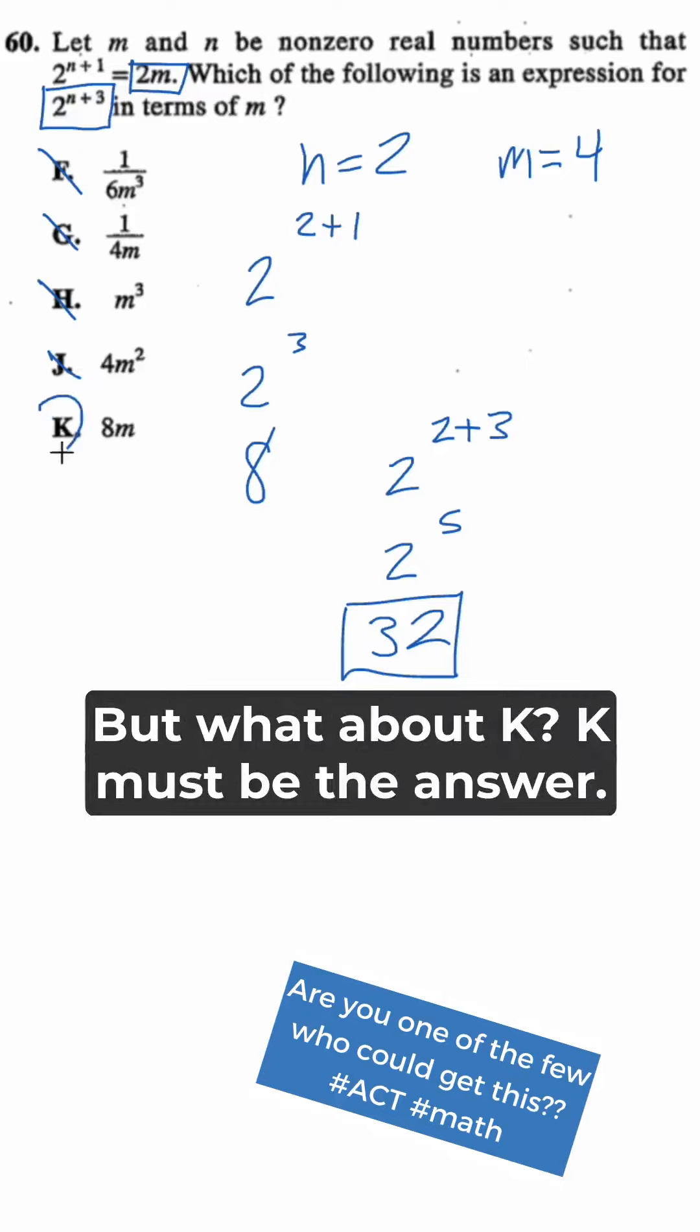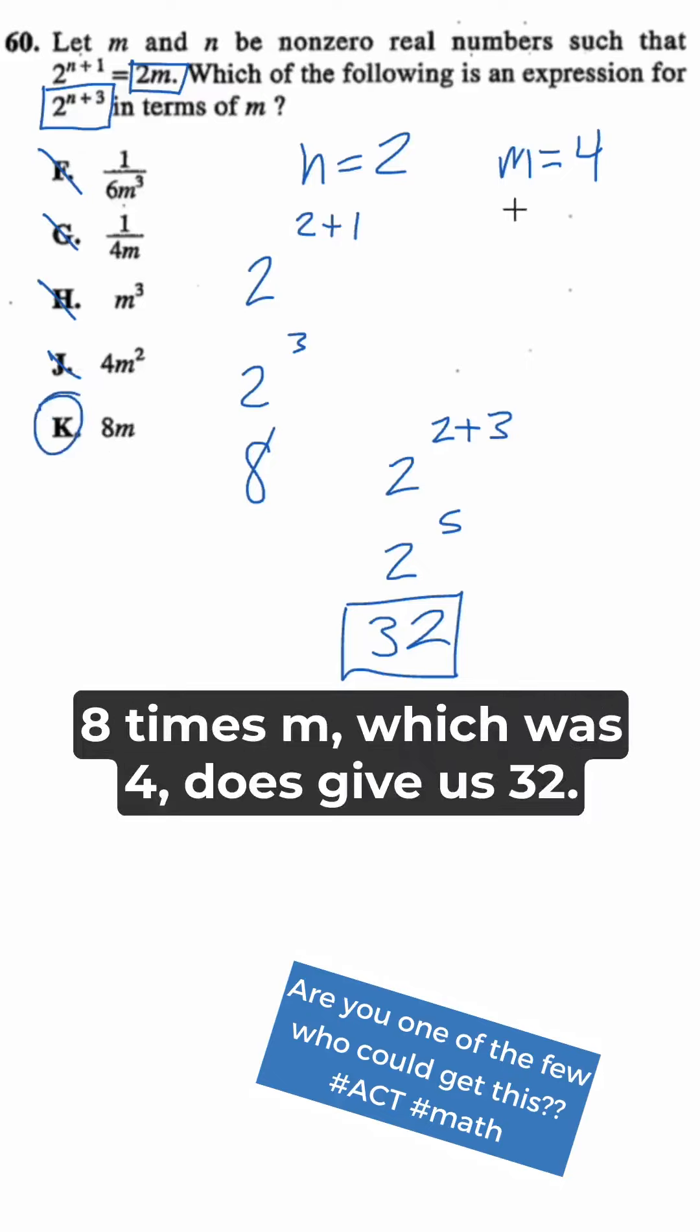But what about K? K must be the answer. 8 times m, which was 4, does give us 32.